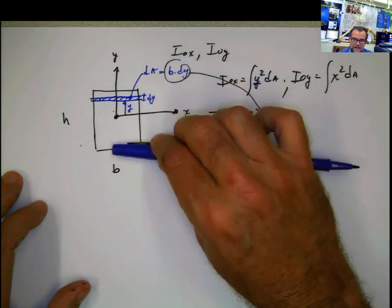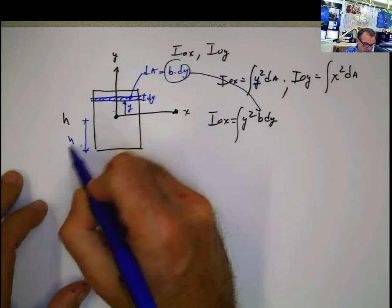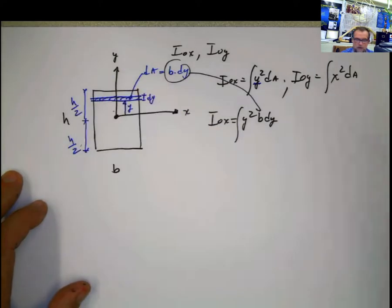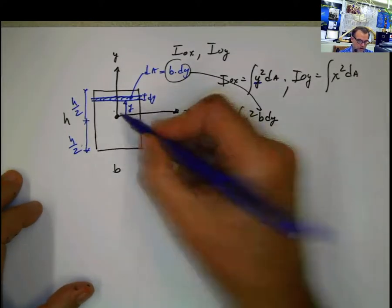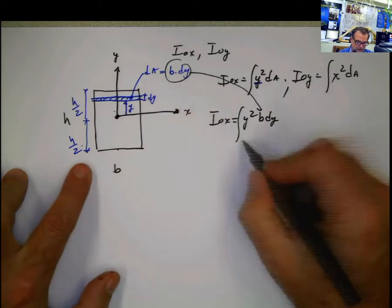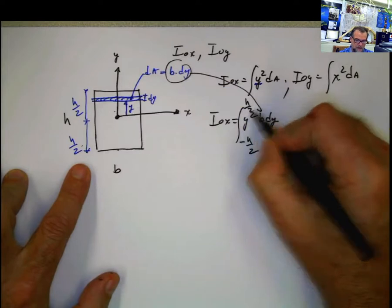This point is negative. And negative what? Well, this is the centroid. So this distance is h divided by 2. And also, this distance h divided by 2, because the center of the rectangular shape is located there. So basically, what we are doing here is going from negative h divided by 2 to positive h divided by 2.